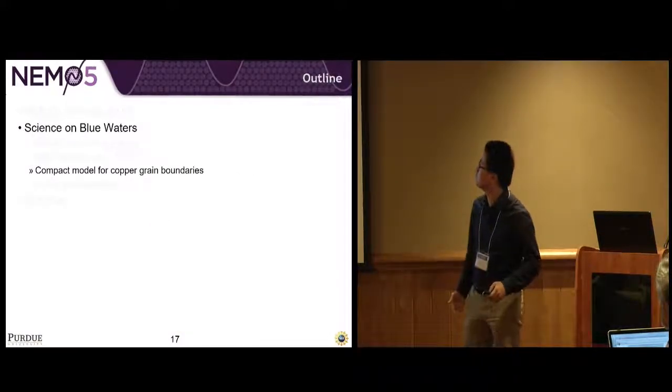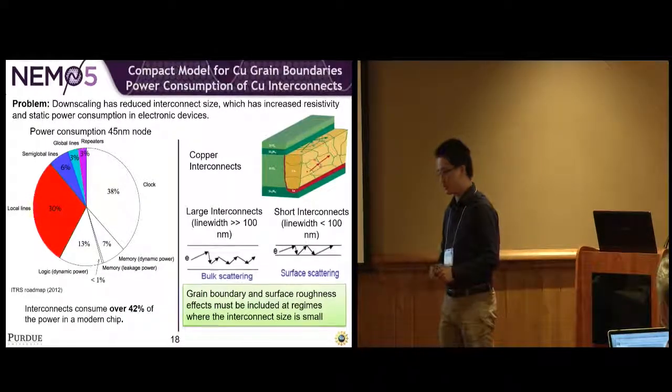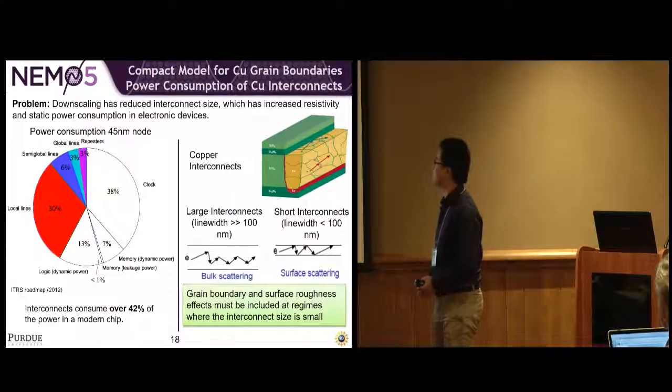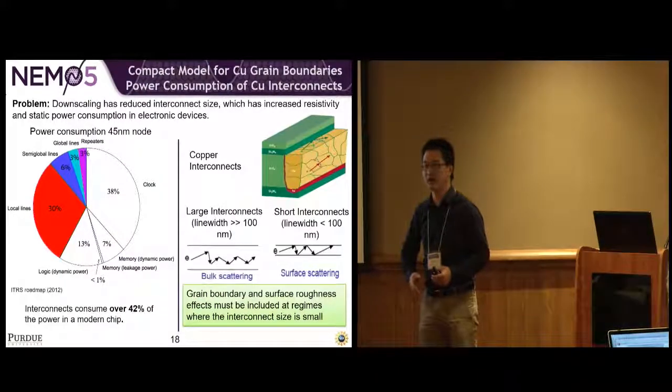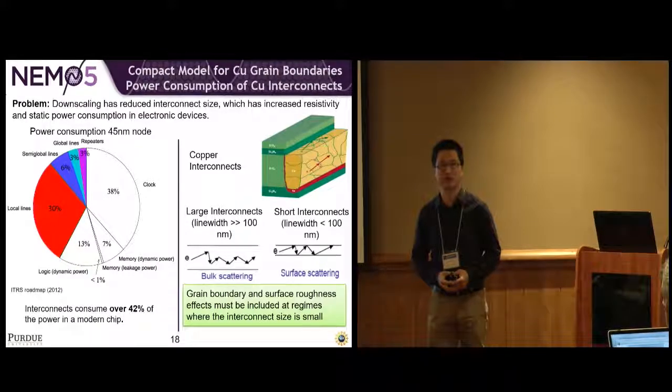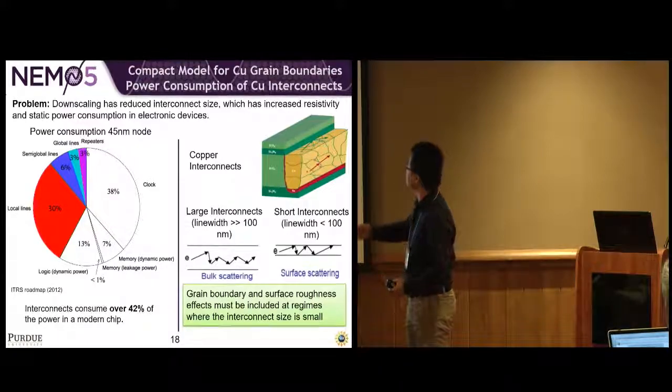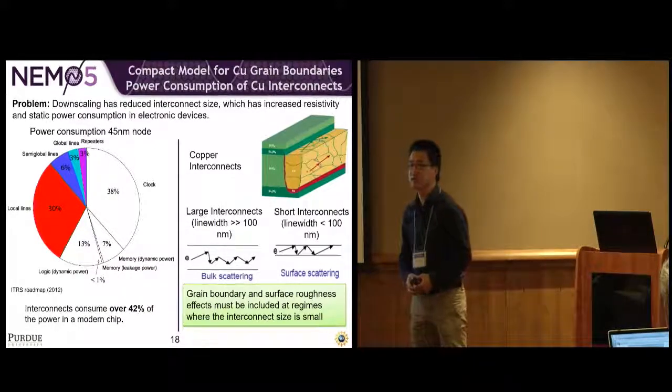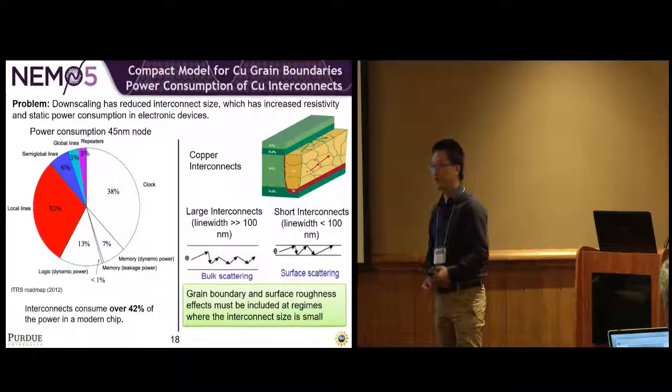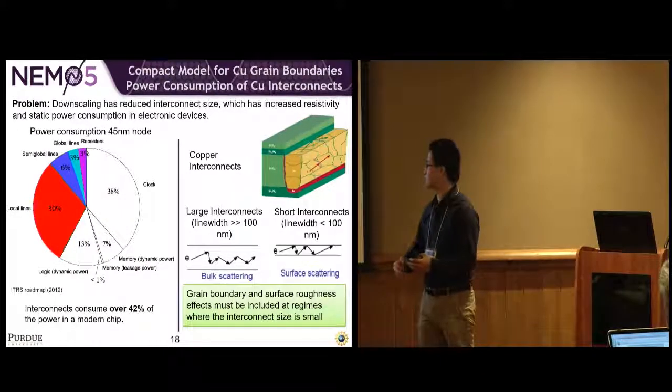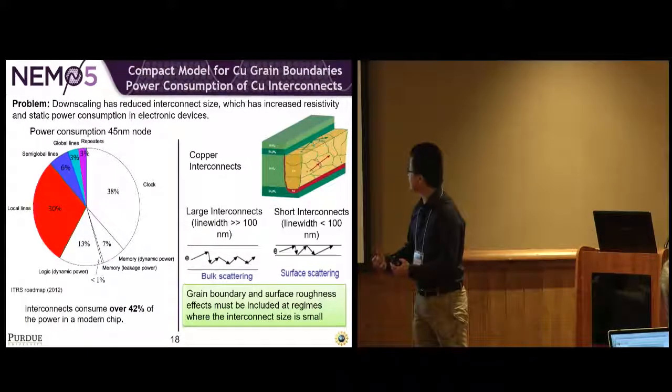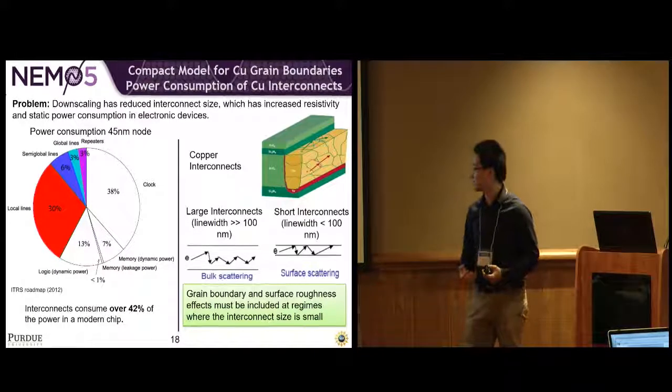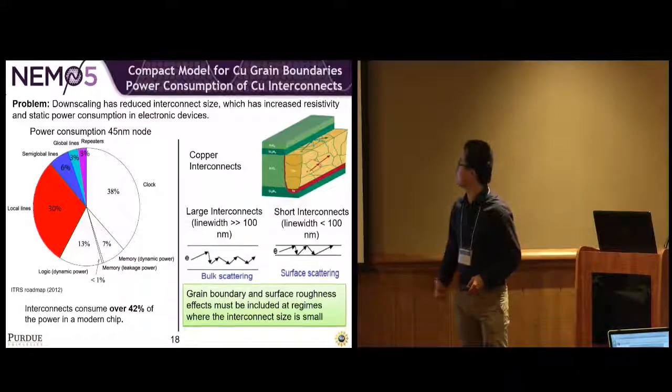The third is compact model for copper grain boundaries. This problem is also about the transistor. When the transistor becomes smaller and smaller, the size of interconnects also becomes smaller. The left pie chart shows an example of power consumption of 45 nanometer transistor. About 42% of the power is consumed by interconnects—that's a lot of power. The red figure shows what the copper interconnects look like. When we have very large interconnects, the majority of electron scattering is within the interconnect. But when the interconnects become smaller, the surface effects become more important. We need to consider grain boundary and surface roughness effects.